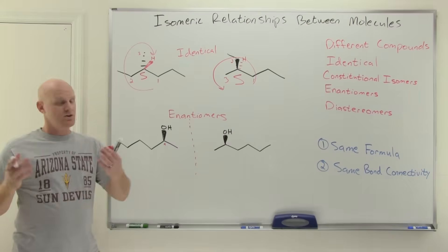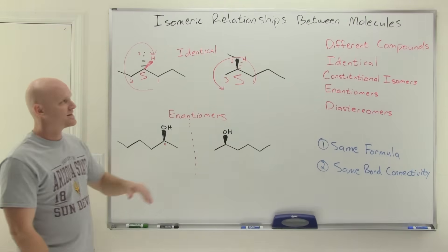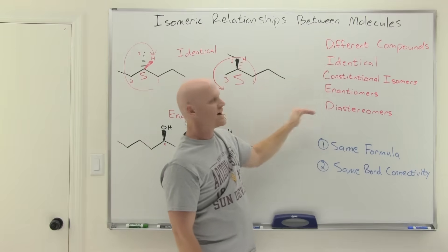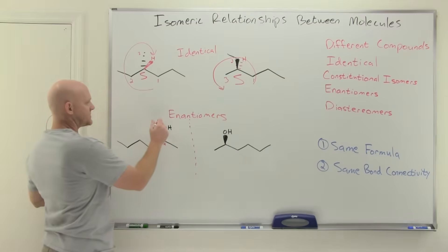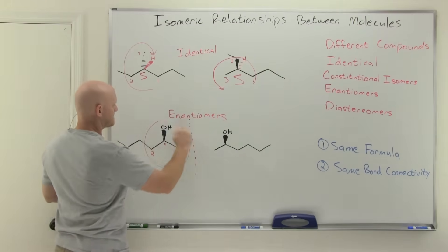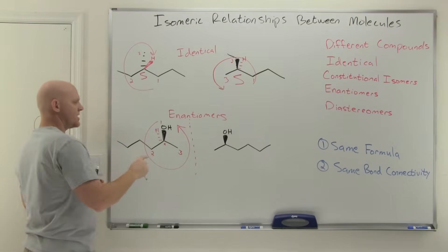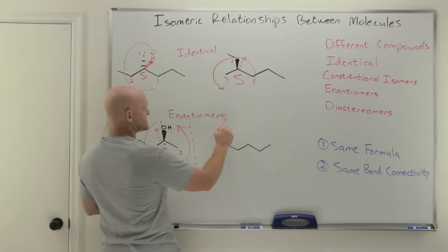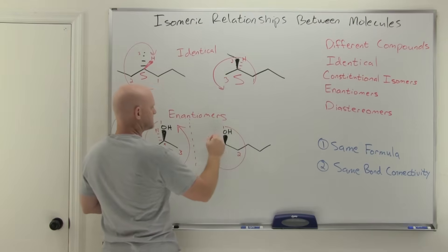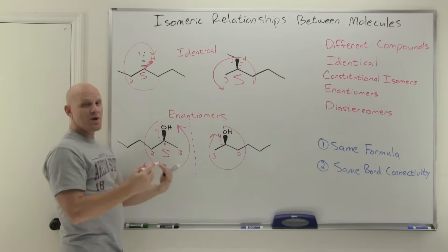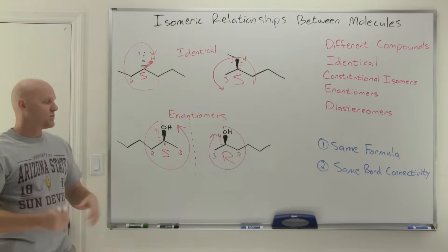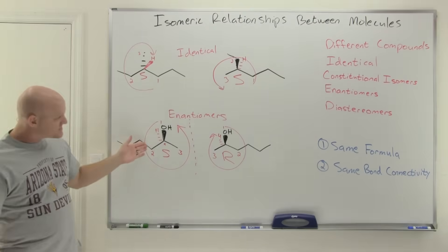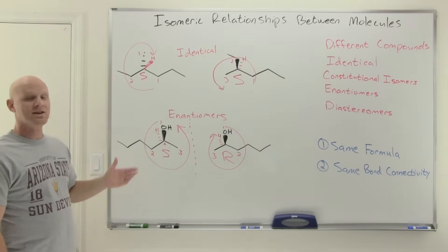If you assign R and S: the first structure gives a left-handed turn with the hydrogen as a dash in the back — that means S. The second gives a right-handed turn with the hydrogen in the back — that means R. The only chiral center is in the opposite configuration, confirming they're enantiomers. In this case it was faster just to visually identify the mirror image and confirm chirality.